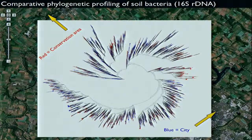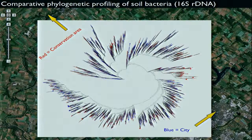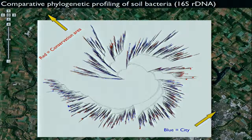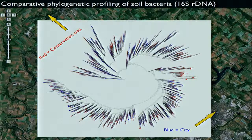We also looked at much more complex things like soil bacteria, using 16S and comparing the conservation area with the city. This requires interesting bioinformatics — we had to come up with a fast, force-based rendering algorithm, with about 80,000 nodes. The value of this is that it focuses you on things that are interesting: you find a clade present in the conservation area that's not in the city, and then go after finding what they are.